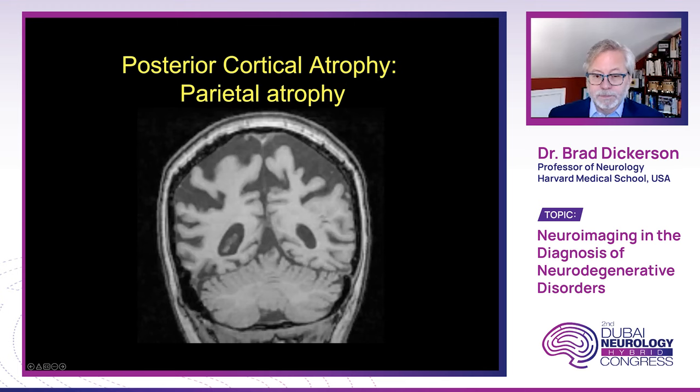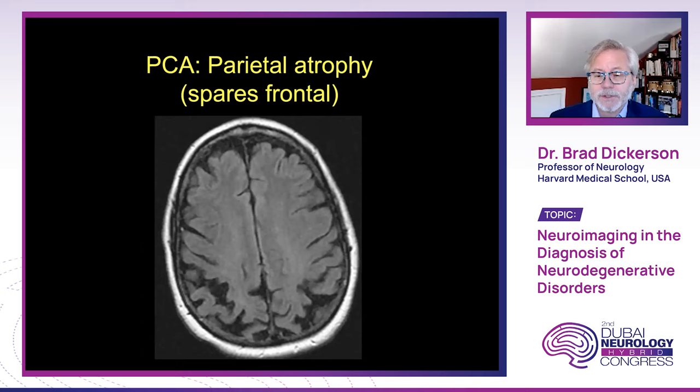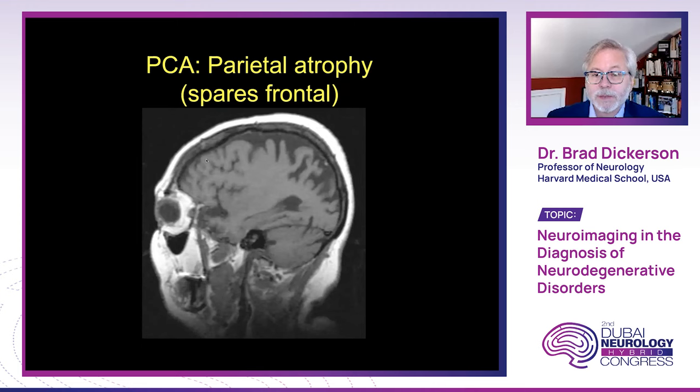Here's a patient with posterior cortical atrophy with striking parietal atrophy. From the axial perspective you can see the sparing of the prefrontal cortex, and from the sagittal perspective it looks like almost a mirror image of the frontotemporal dementia patient, where the posterior cortex is strikingly atrophic. This patient turned out to have PCA due to Alzheimer's disease pathology, which is most common in this rare clinical syndrome.